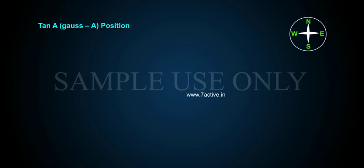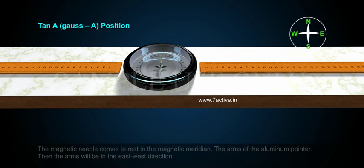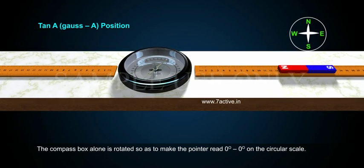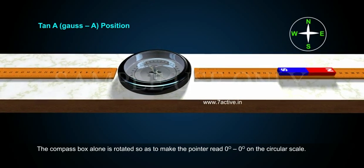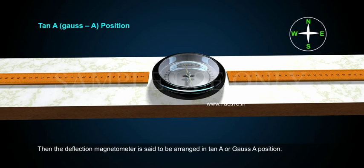Tan A or Gauss A position. The magnetic needle comes to rest in the magnetic meridian. The arms of the aluminum pointer, then the arms will be in the east-west direction. The compass box alone is rotated so as to make the pointer read 0 degree to 0 degree on the circular scale.